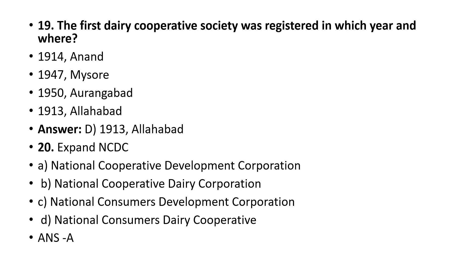The first dairy cooperative society was registered in 1913 in Allahabad. Expand NCDC: National Cooperative Development Corporation.